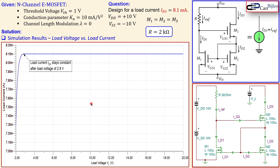This concludes example number three — the Wilson current source using n-channel enhancement MOSFETs. If you have any questions or comments, please let me know in the comment section. Don't forget to like and share the videos so we can reach more people for these interesting topics. Thanks for watching and see you next time.